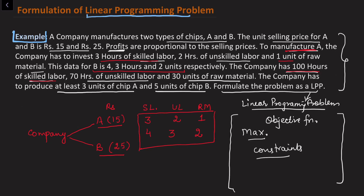The total available skilled labor is 100 hours, 70 hours of unskilled labor is available, and 30 units of raw material is available. The company has to produce at least three units of chip A, so x1 must be greater than or equal to three, and chip B requires at least five units, so x2 must be greater than or equal to five.